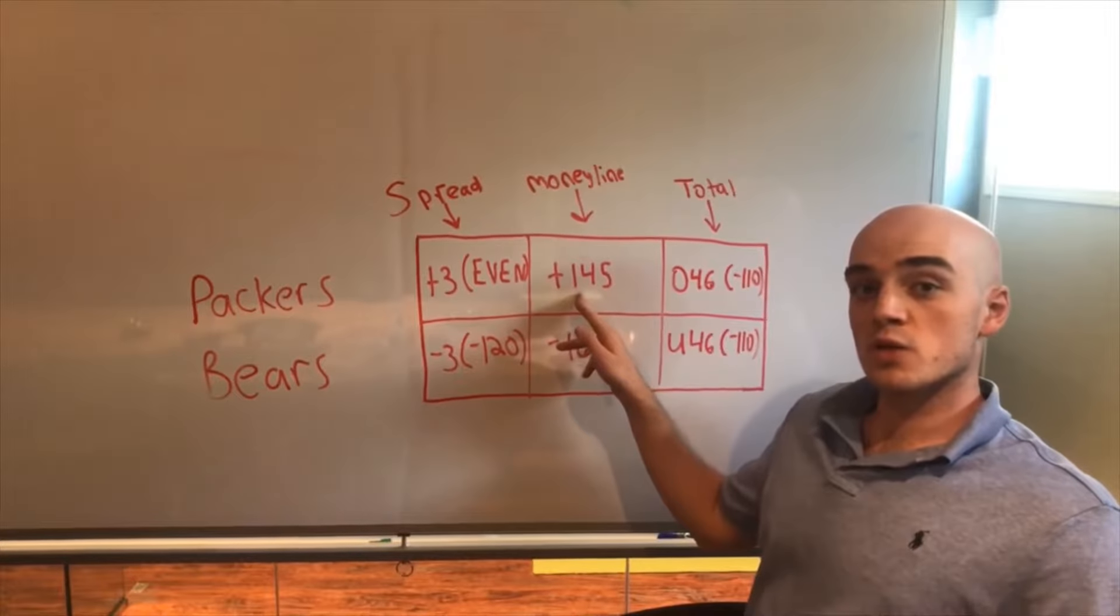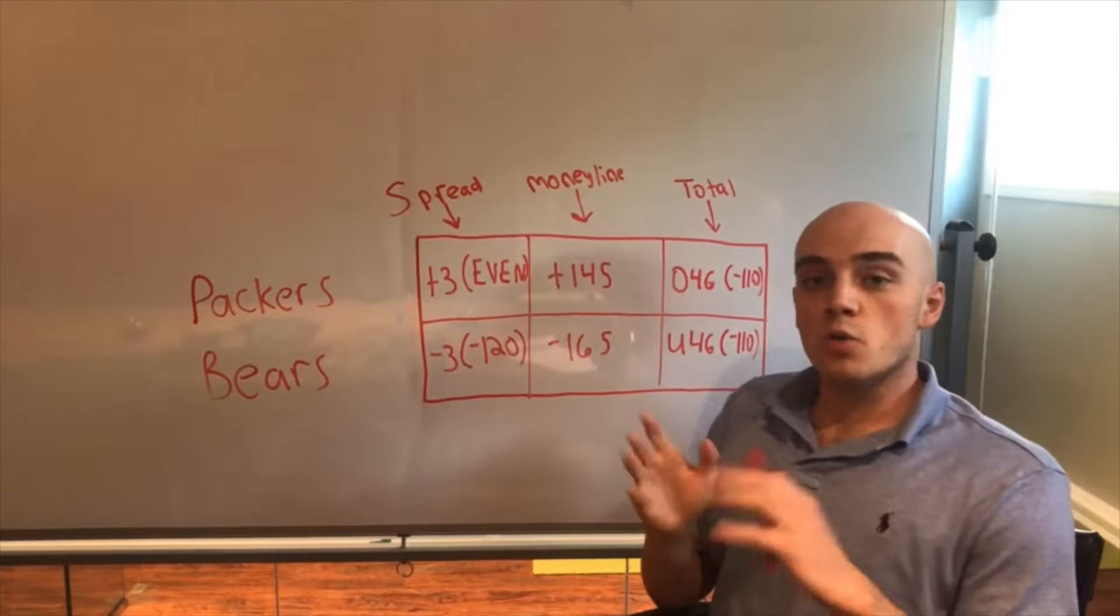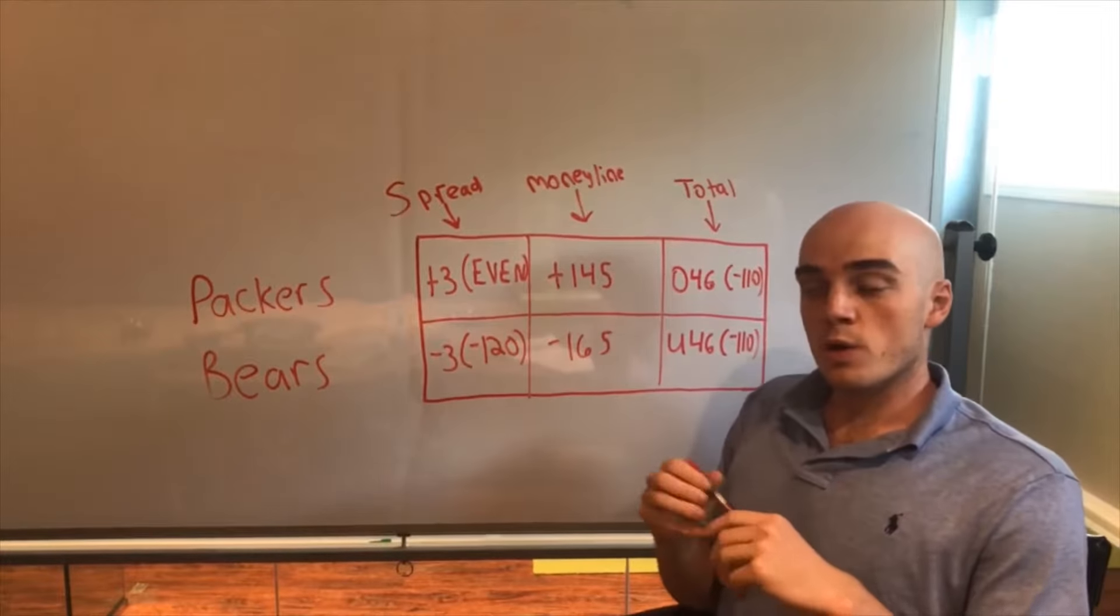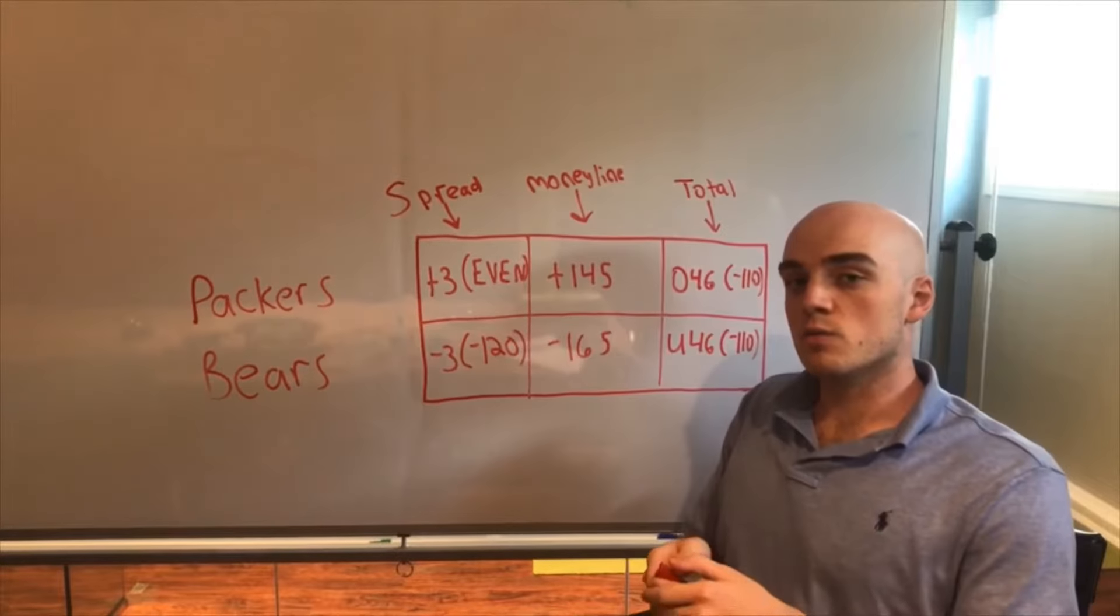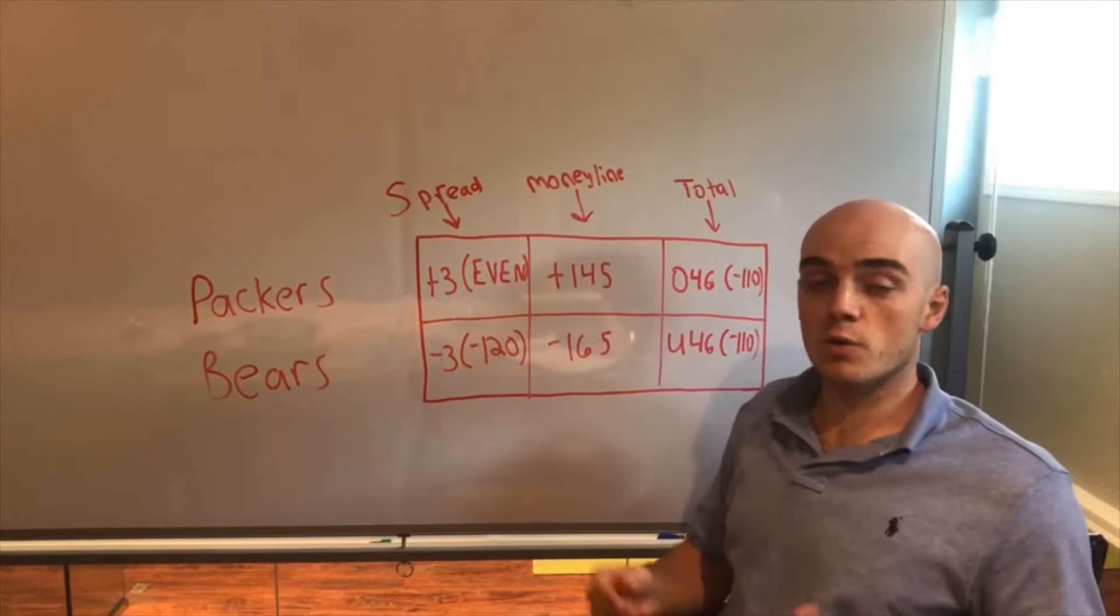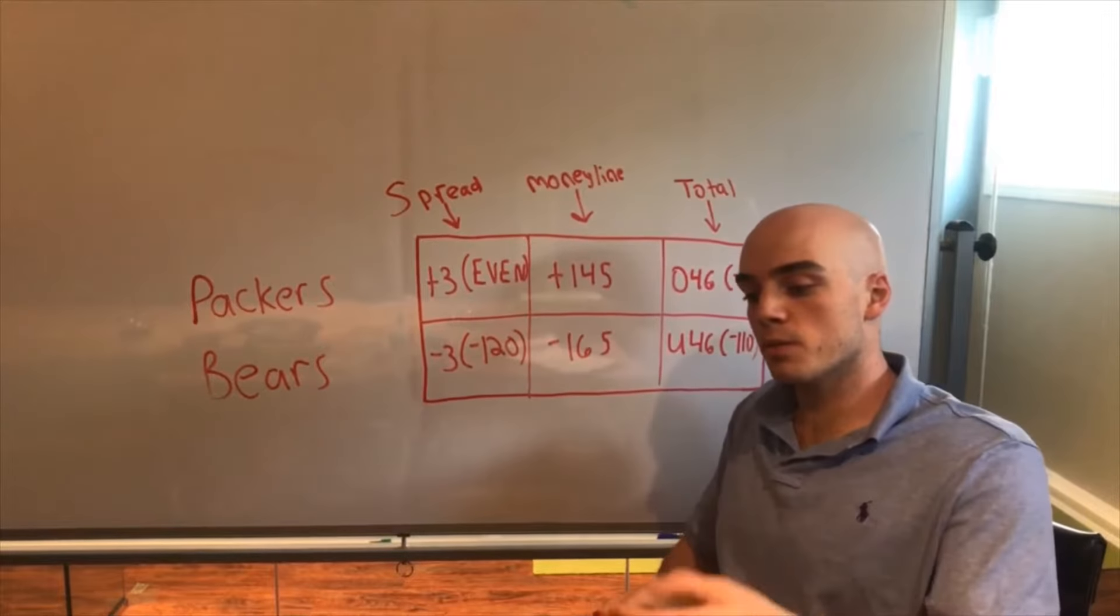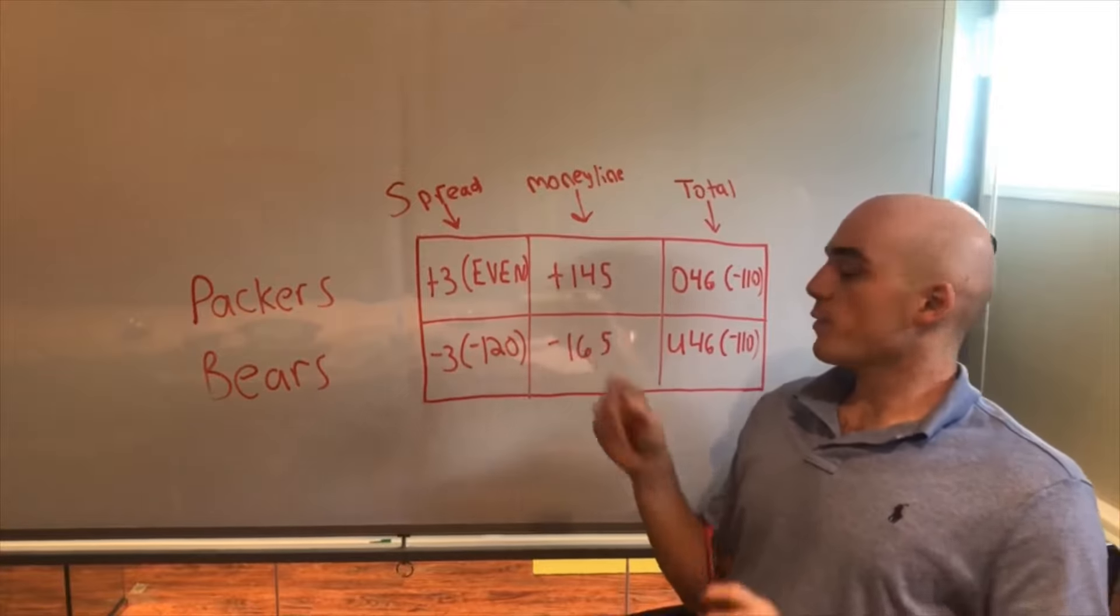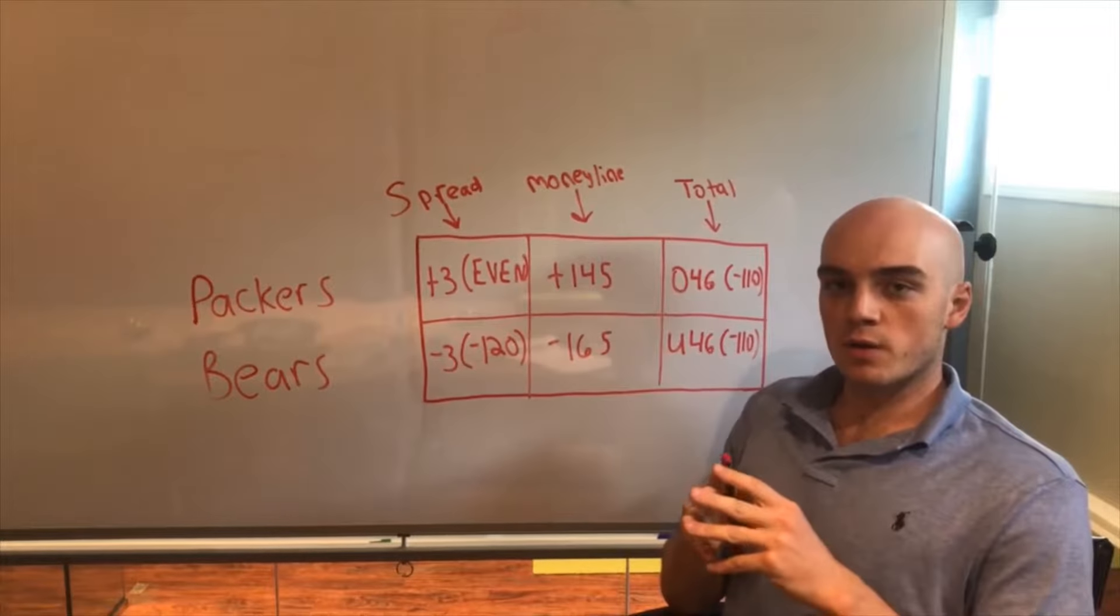So the Bears are the home team here, Packers are the underdogs, so they're plus 145. What this means is if you bet $100 on the Packers to win the game, you'll win $145. So you bet $100, you win $145, your total payout would be $245 - the $100 that you put in plus $145 that you won equals $245.